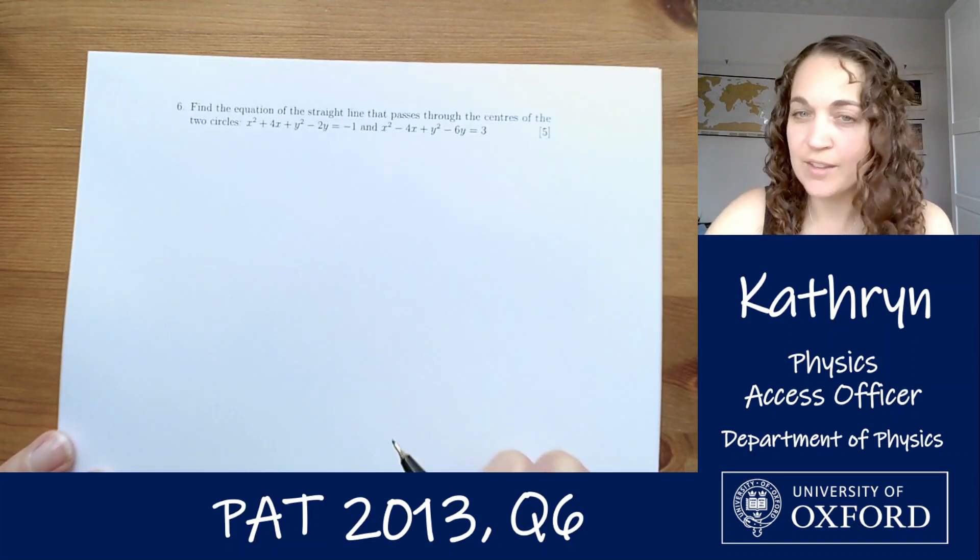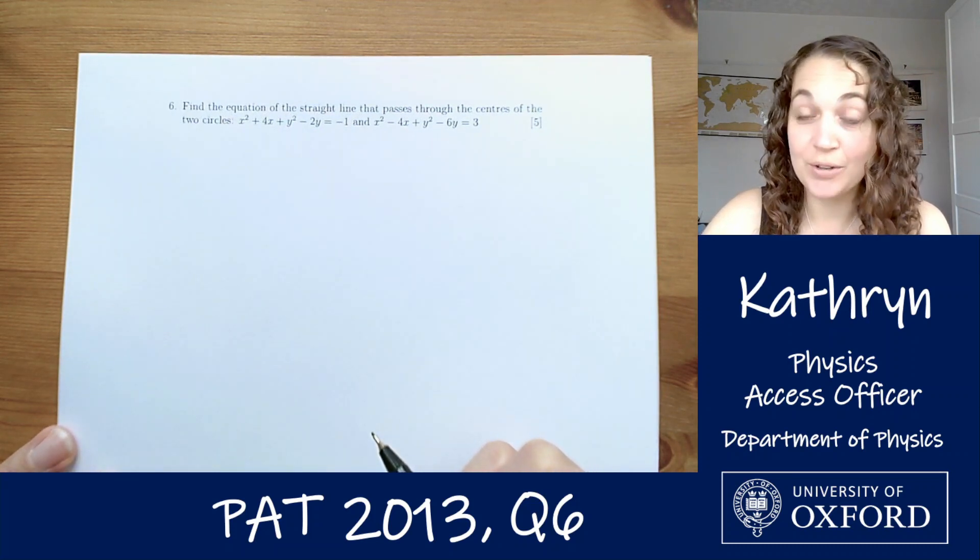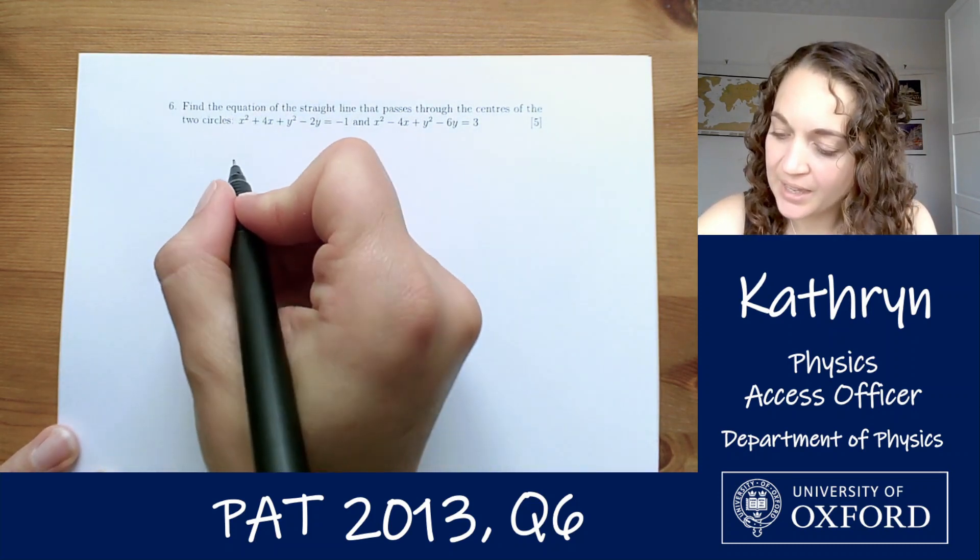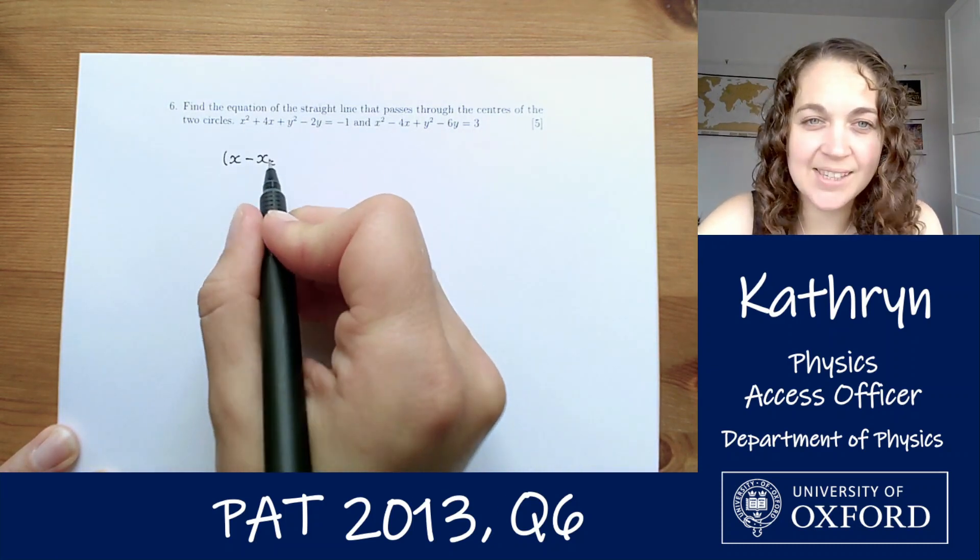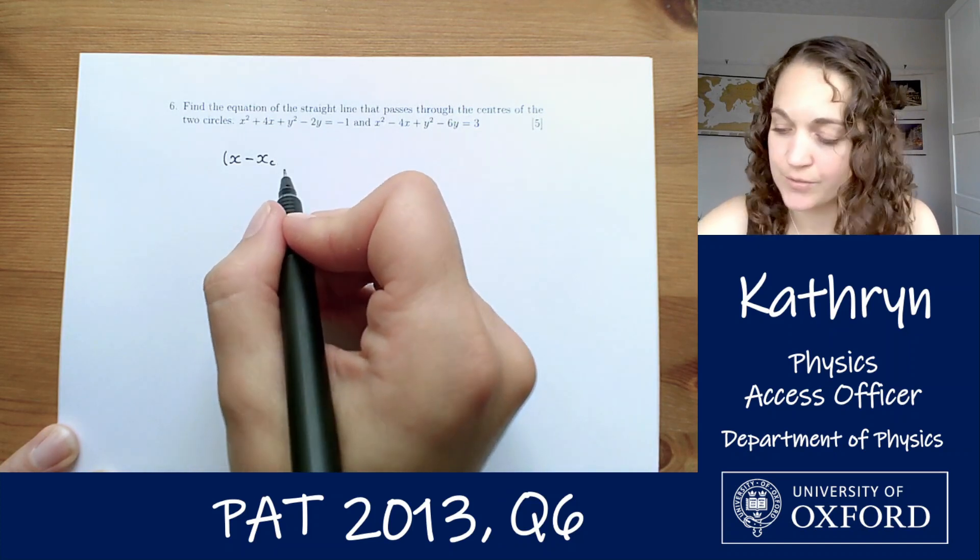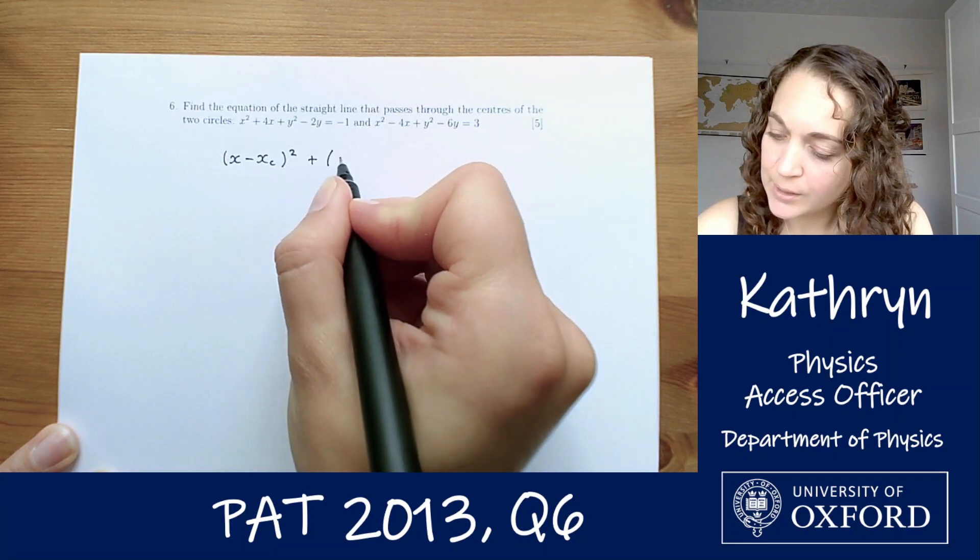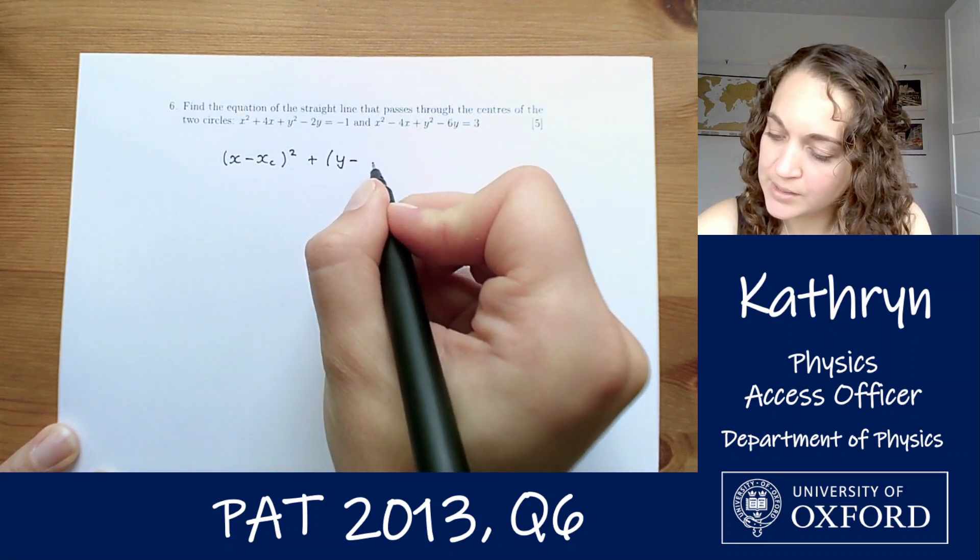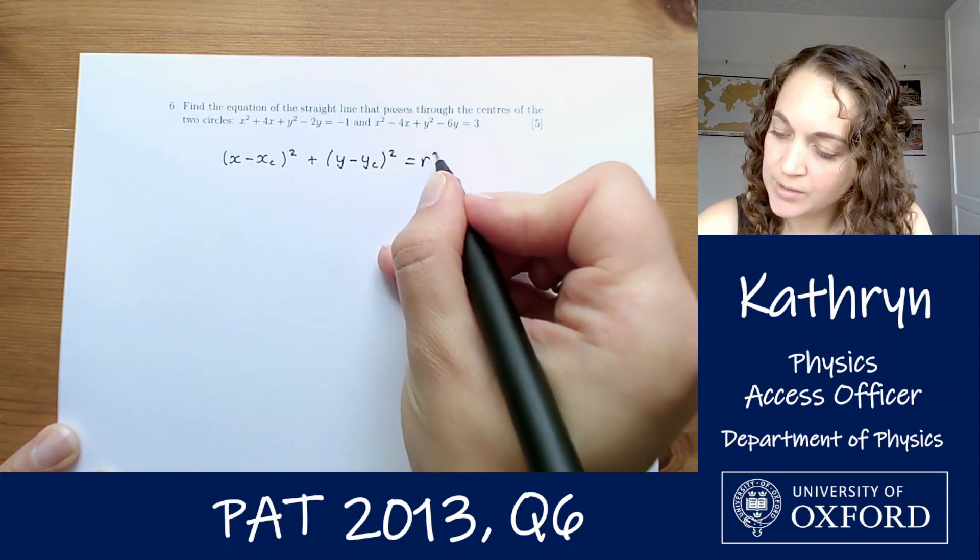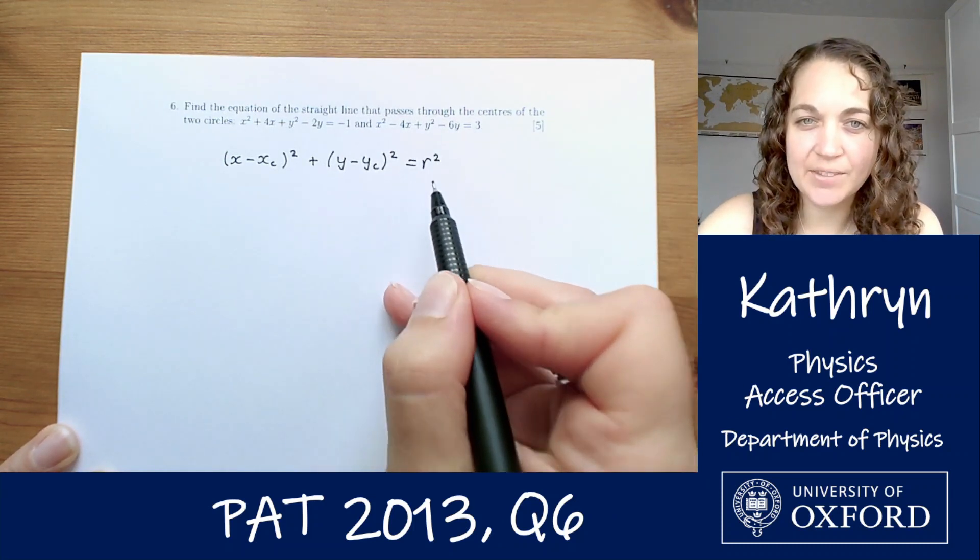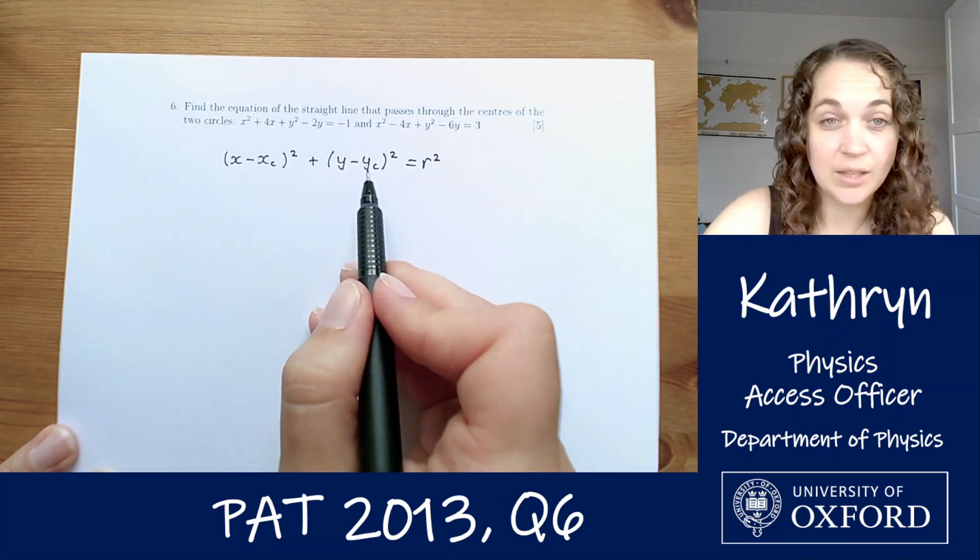So first things first, standard format of an equation for a circle is x minus xc, where xc is the x-coordinate of the centre of the circle, squared, plus y minus yc squared equals r squared, where r is the radius of the circle. So that's going to give us a circle centred at xc, yc.